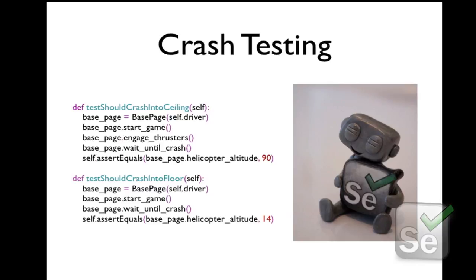We've had fun and we've made elephants dance. But what we haven't done is written any tests. We wanted to prove that it's possible to write tests. We already had a lot of the values we needed. These two simple tests: the first one will crash into the ceiling — you start the game, engage the thrusters, never actually disengage them, wait until it's crashed, then assert that the helicopter altitude is 90, which is the position of the ceiling at the start of the game. Similarly, the second test starts the game, never engages the thrusters, and we're expecting it to crash into the floor. Screenshots would be a very good idea to have, at the very least when your tests fail. This gives you a way to investigate a failure — a quick way of saying at least you're on the right page.